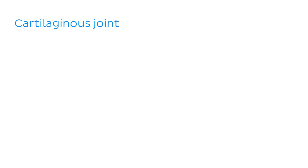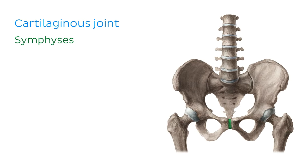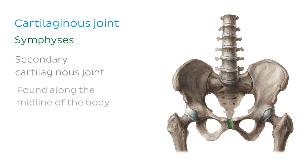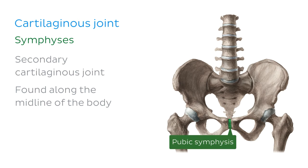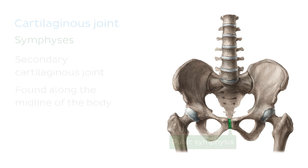The second type of cartilaginous joint is known as a symphysis, or secondary cartilaginous joint, where the bones are connected by fibrocartilage. This type of joint is found primarily along the midline of the body — for example, the pubic symphysis, which we can see here highlighted in green.